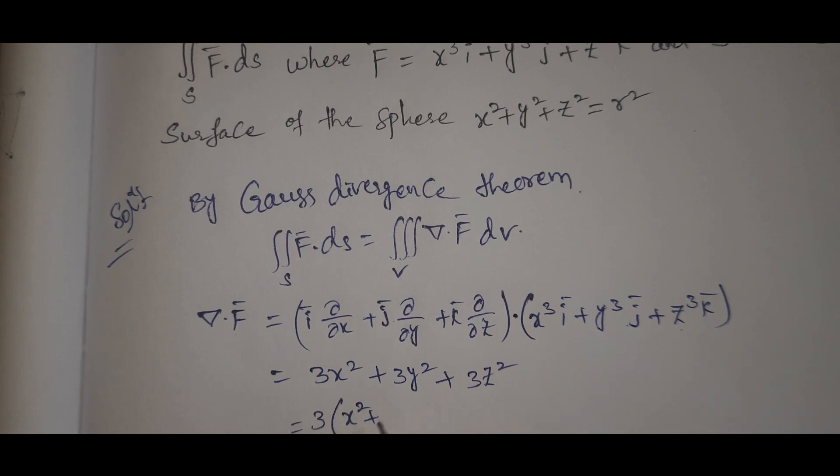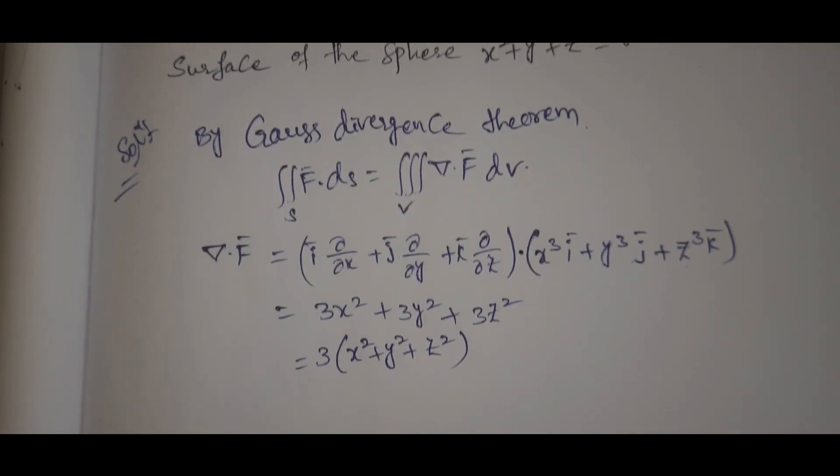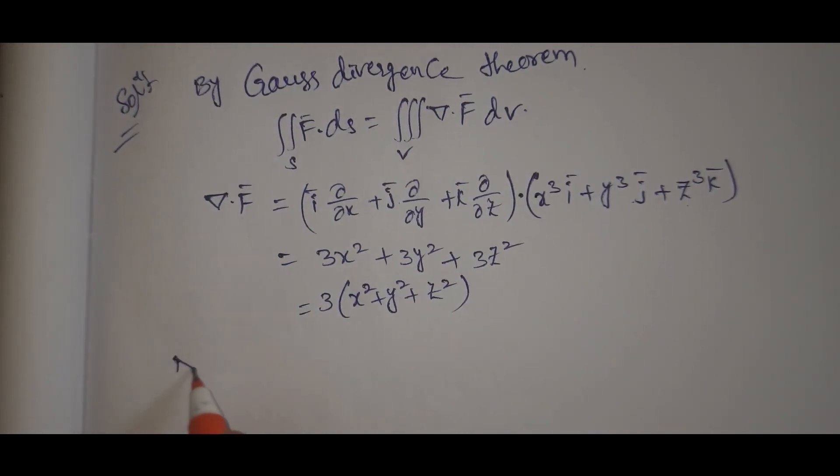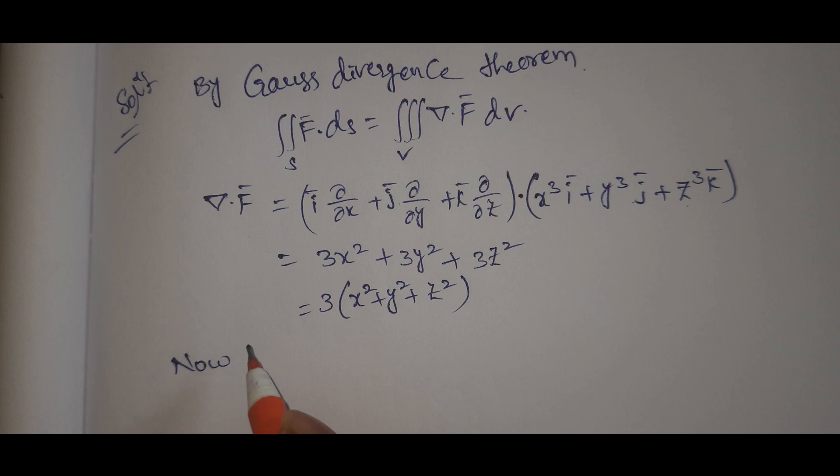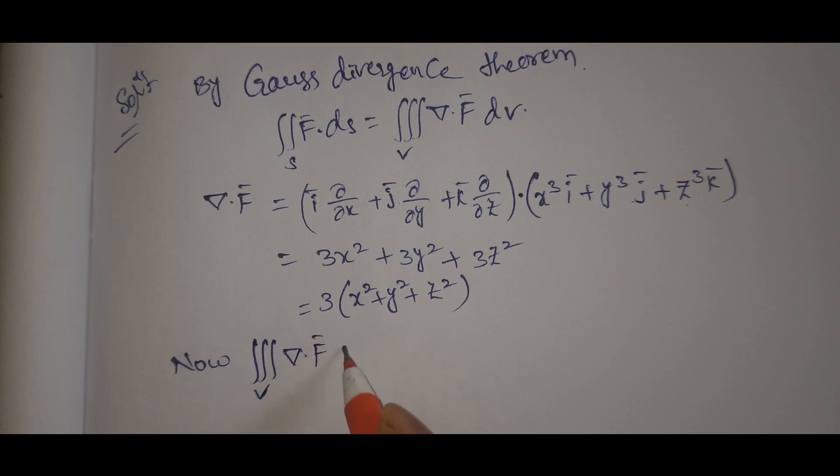So we get 3x squared plus 3y squared plus 3z squared equals 3 times x squared plus y squared plus z squared. Now, triple integral V del dot F dV equals